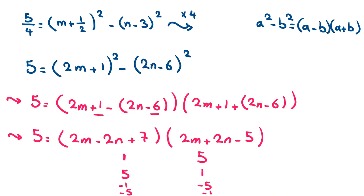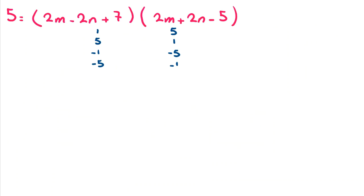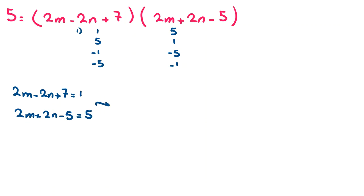Since the product is 5, the four factor pair cases are: (1, 5), (5, 1), (-1, -5), and (-5, -1). Let me write them clearly. We have four cases to consider on the next page.